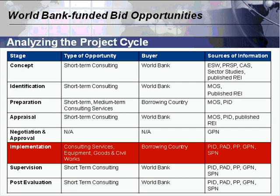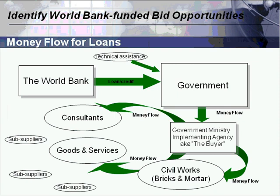Looking at the project cycle another way: you have stages from concept to preparation to implementation and post-evaluation. Implementation is where the bulk of money is spent. In early stages, opportunities tend to be short-term consulting; the implementation phase is where you find the larger contracts. The World Bank is the customer for some smaller consulting contracts, but the borrowing country is the customer during implementation—this is where you want to concentrate your sales effort. From a business perspective, the PID, the PAD, the procurement plan, the general procurement notice, and the specific procurement notice are the most important documents.